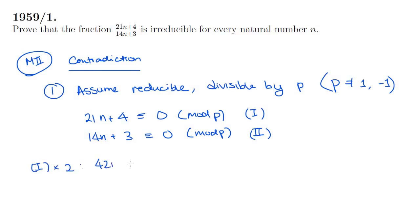And if we multiply equation 1 by 2, we find that 42n plus 8 is congruent to 0 mod P. And when we multiply equation 2 by 3, we find that 42n plus 9 is congruent to 0 mod P. Let us call these equations, equations 3 and 4. And from here on, hopefully you see it, you see what to do next.